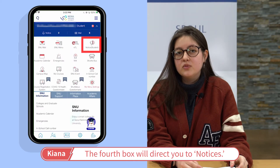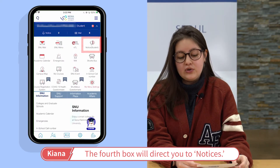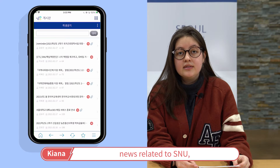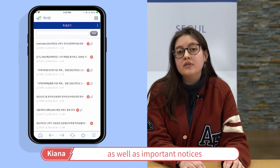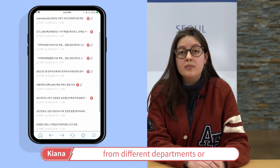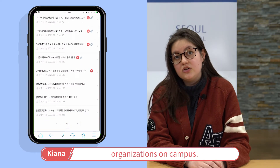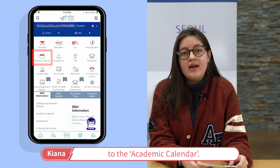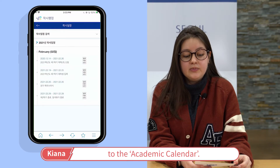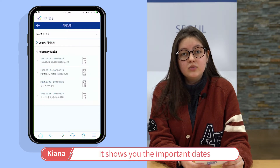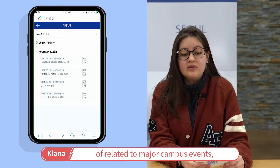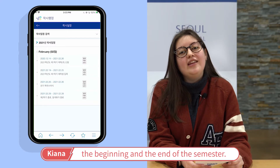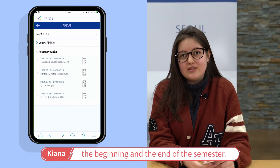The fourth box will direct you to notices, where you can check all kinds of news related to SNU as well as important notices from different departments or organizations on campus. The fifth box is a shortcut to the academic calendar. It shows you the important dates related to campus events, including class registration, the beginning, and the end of the semester.